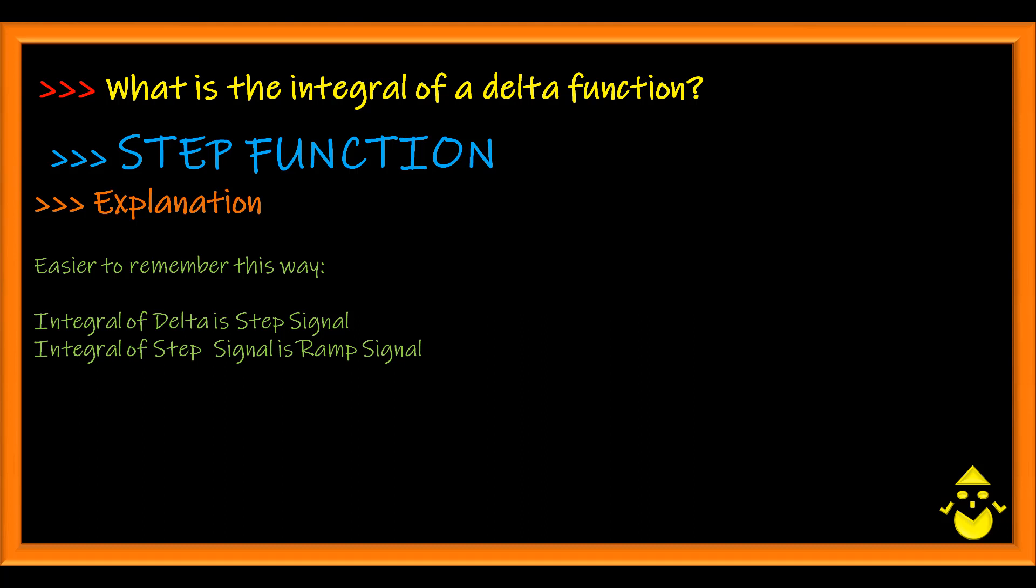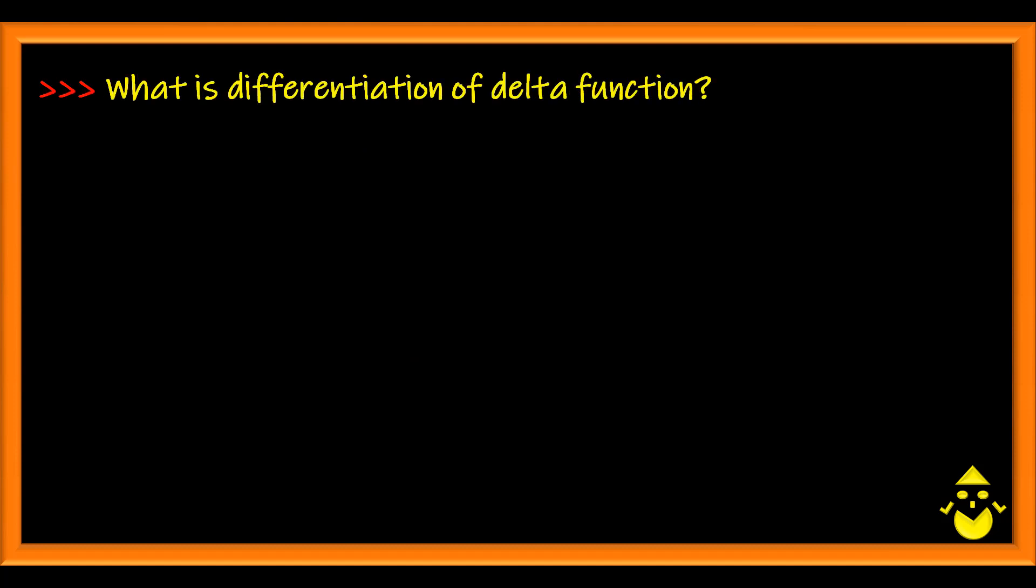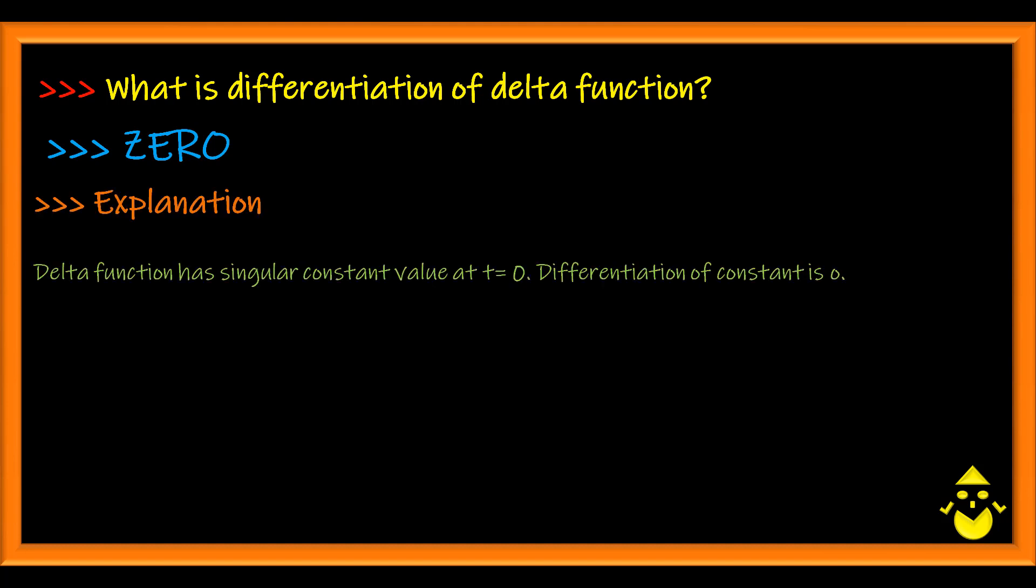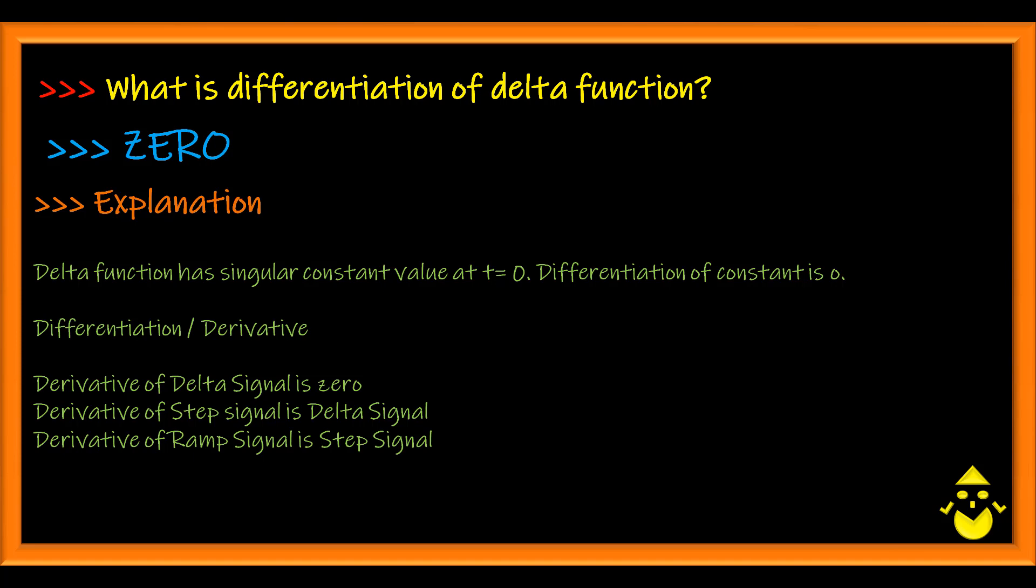What is the differentiation of a delta function? Zero. Since delta is having a constant value 1 at t equal to 0, differentiating it obviously gives you 0 since differentiation of a constant is always 0. It is also useful to know these following derivatives: derivative of a delta signal is 0, derivative of a step signal is delta signal, derivative of a ramp signal is step signal, derivative of a parabolic signal is your ramp signal.